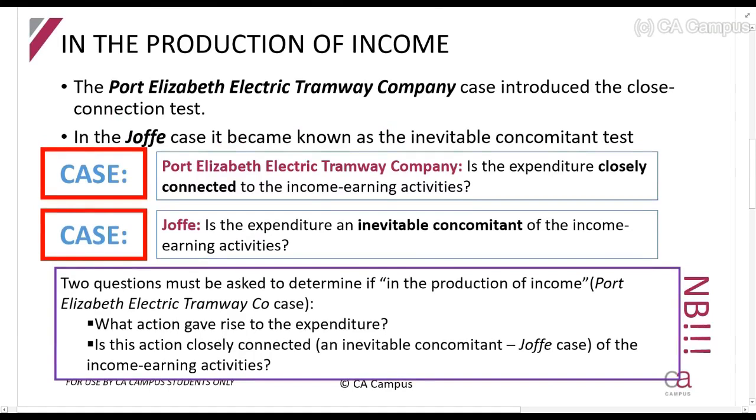The questions that were asked, there were two court cases that discussed it. And the most important one is the Port Elizabeth Electric Tramway Company case. This is the case that tells us that we need to do the close connection test. We asked these two questions. What action gave rise to the expenditure? And is this action closely connected to the income earning activities?